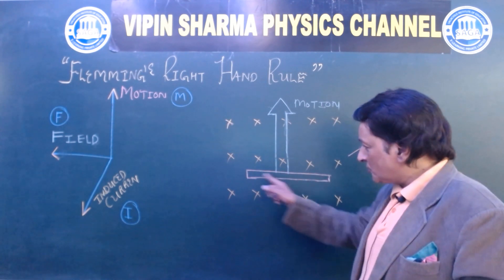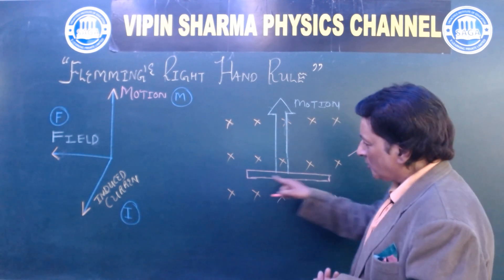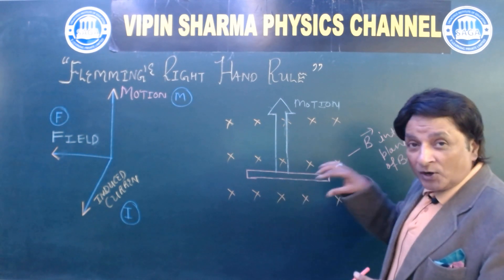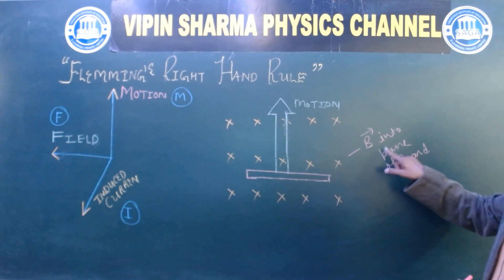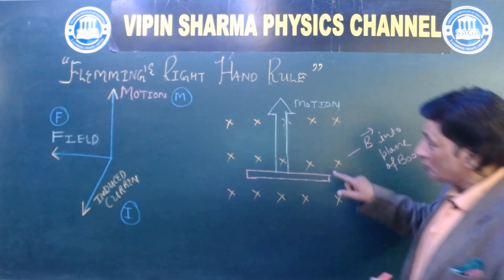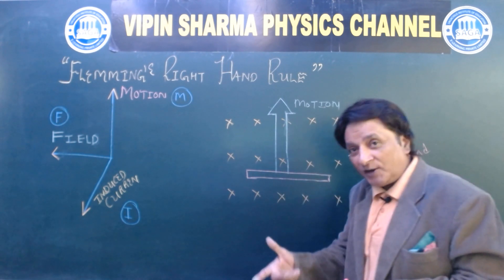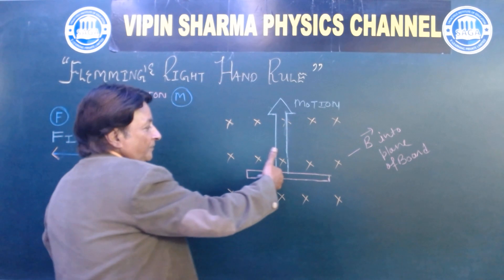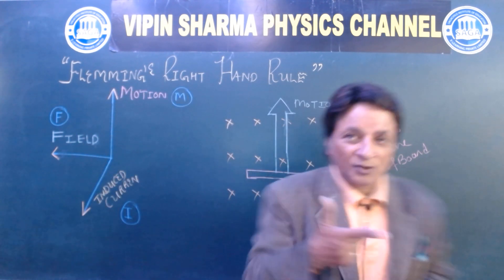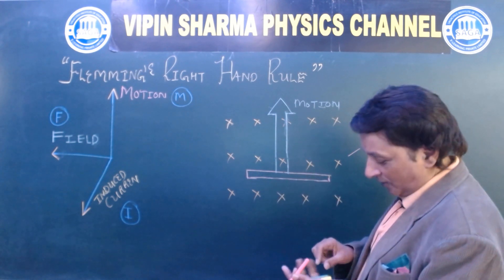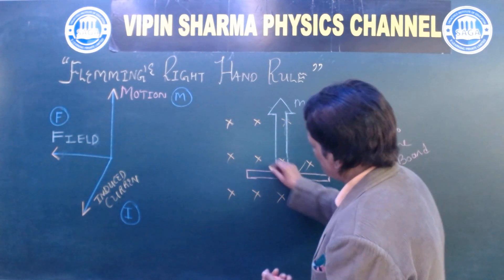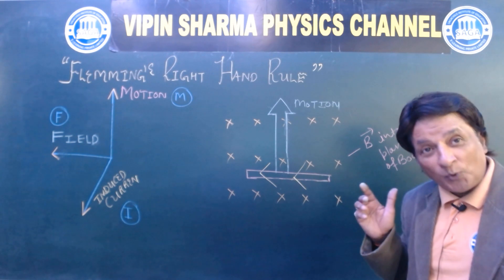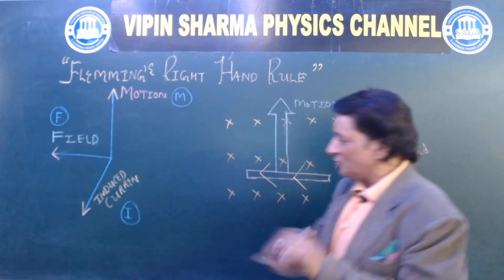See students, this is a conductor. These cross marks represent the magnetic field perpendicular to the plane of the board — B, that is the magnetic field induction, is perpendicular to the plane of the board, shown as crosses. Now how do we find the current direction? The thumb represents motion, the forefinger represents the field — coming here like this — this is the direction of induced current. This is how we use Fleming's Right Hand Rule to find the direction of induced current.